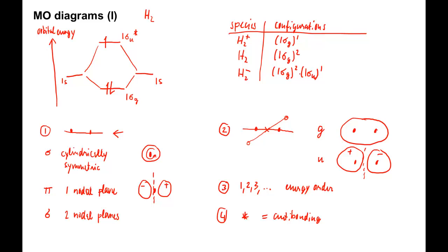The fourth electron goes again into the antibonding MO and gives H2 2-. Now both MOs are fully populated. The electron configuration is written as 1 sigma G squared, 1 sigma U squared. Since antibonding MOs are usually more destabilizing than the bonding MOs are stabilizing, there is no bond in this molecule.